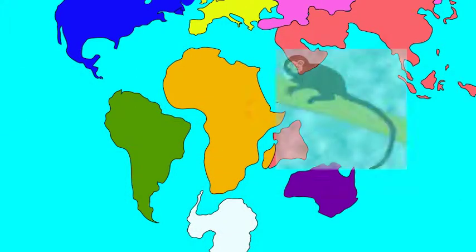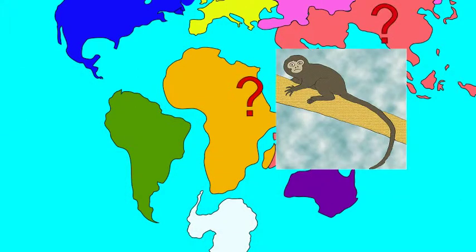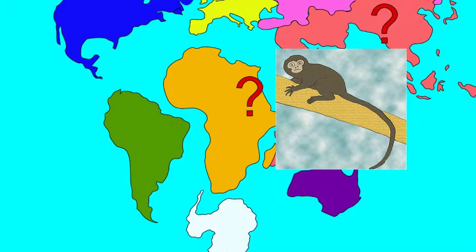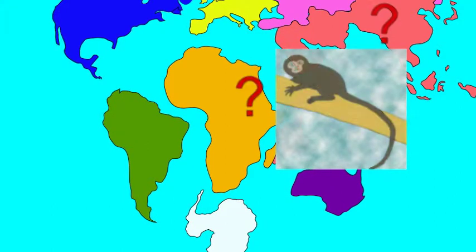It is not known whether the earliest anthropoid primates originated in Africa and then traveled to Asia, or originated in Asia and traveled to Africa.